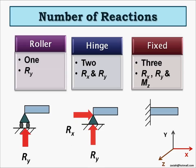Hinge support has two reactions: horizontal reaction and vertical reaction. Lastly, fixed support has all three reactions: horizontal reaction Rx, vertical reaction Ry, and bending moment Mz.